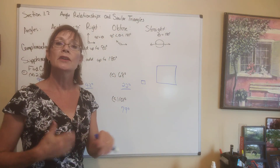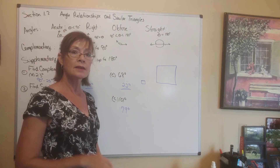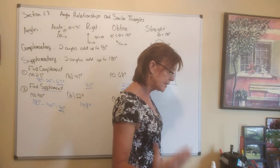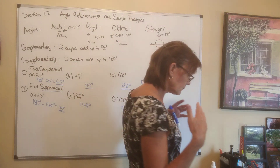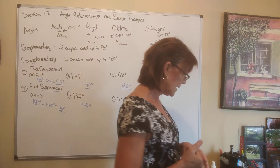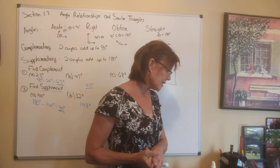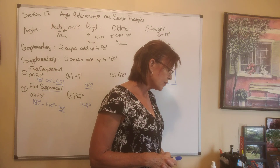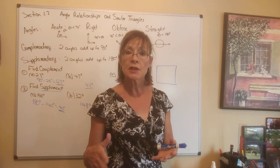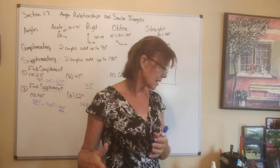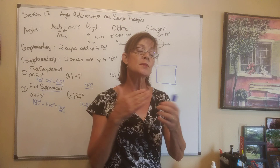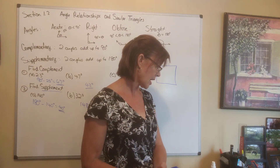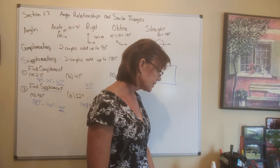Figures that are the same shape and the same size have a different label — those are called congruent. Now we have this big theorem: Euclid's theorem. It says if two triangles are similar — they have the same shape, not the same size — then their corresponding sides are proportional to each other.